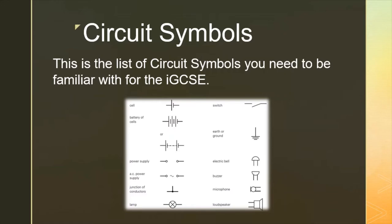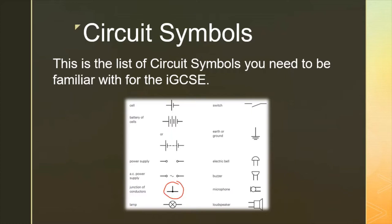This symbol here is for a power supply — that's when we're using a power supply as opposed to a battery. If that power supply is providing an AC supply, then we put a wiggly line in the gap between the two circles. I'm going to talk a little bit more about AC and DC supplies in another lesson. We then move on to a junction, and at the bottom of this side we've got a lamp.